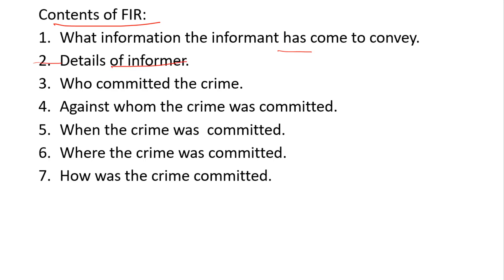Second point: details of the informer — the informer's name, address, and other details must be mentioned. Third point: who committed the crime — if the accused person is known, their name and address must be given. However, if the accused is unknown, the FIR can still be lodged; leaving the accused unknown is permissible in that case.